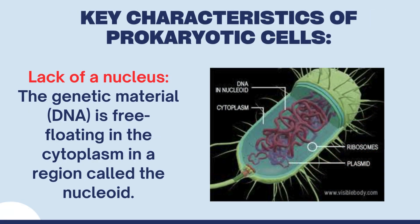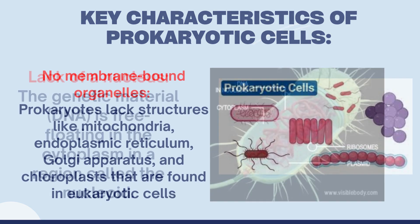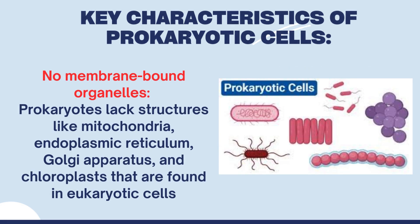Key characteristics of prokaryotic cells: lack of a nucleus — the genetic material, DNA, is free-floating in the cytoplasm in a region called the nucleoid. No membrane-bound organelles: prokaryotes lack structures like mitochondria, endoplasmic reticulum, Golgi apparatus, and chloroplasts that are found in eukaryotic cells.